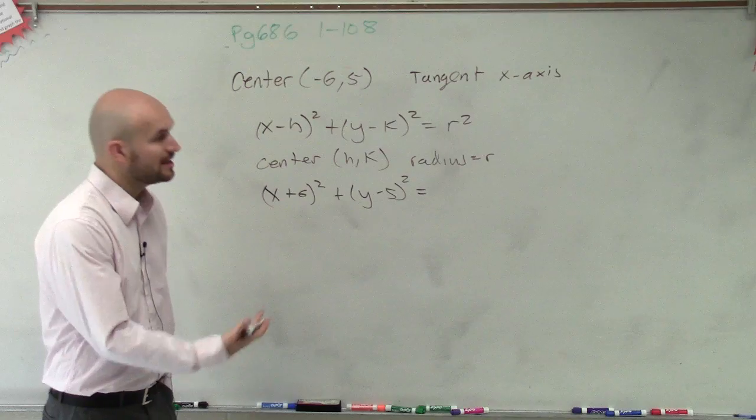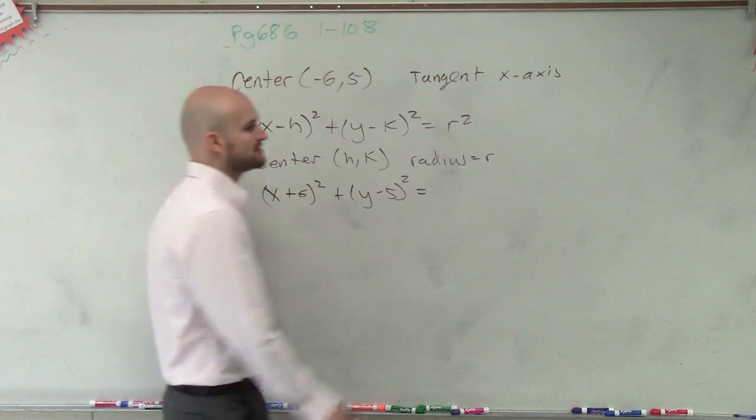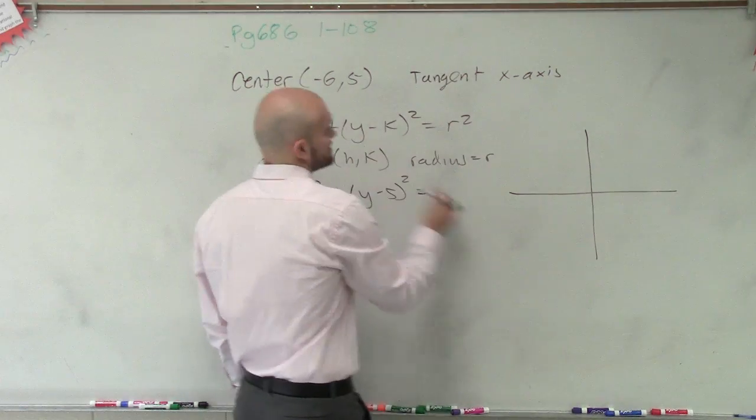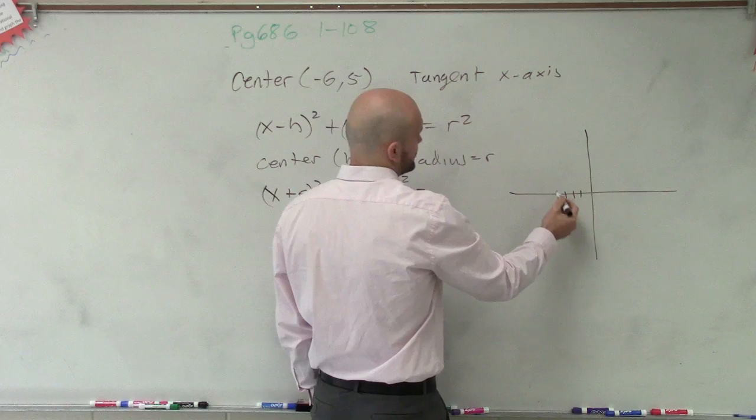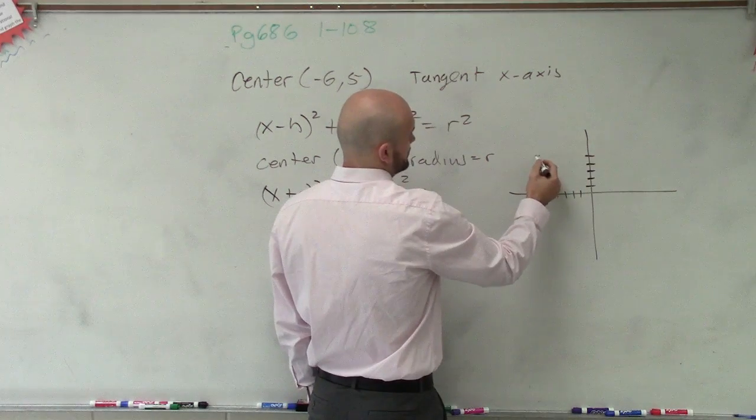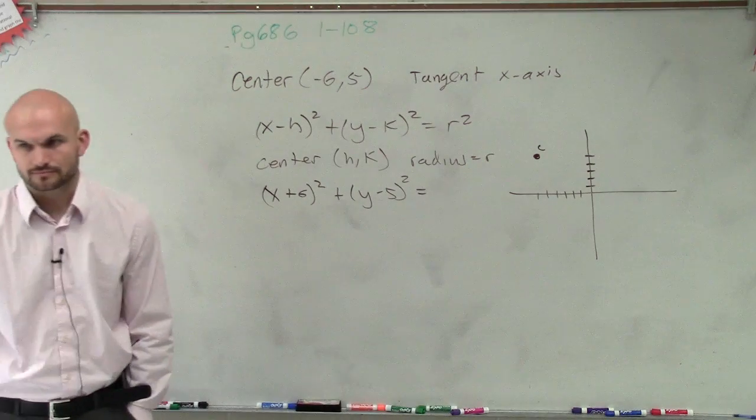So to do that, I need to first understand what tangent to the x-axis is and what our graph is going to look like. So let me just plot this out real quick. So it's negative 6 up 5, 1, 2, 3, 4, 5, 6 up 5, 1, 2, 3, 4, 5. So roughly, my center is right there.